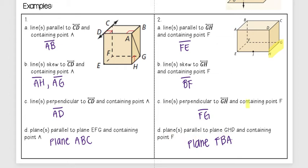And then for a plane parallel to plane GHD, that is this entire plane right here, that is going to be this plane right here. So I chose the points FBA, but you could have chosen any three of those points in any order.